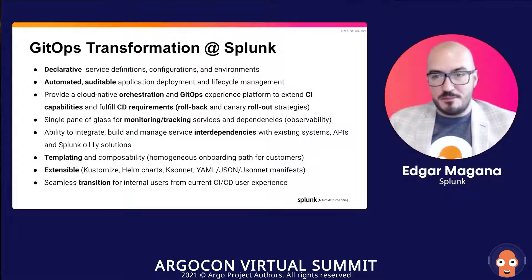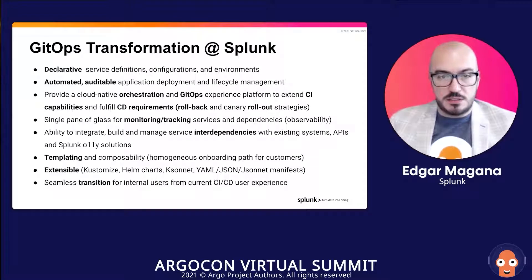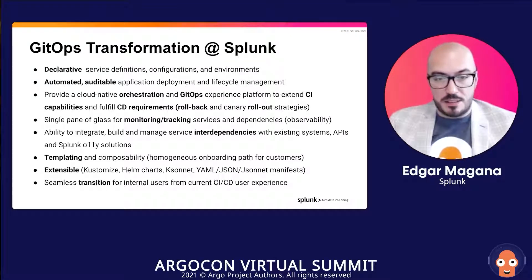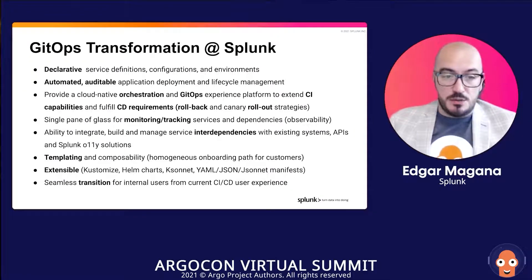In the microservice architectural world, it's impossible to have all the pieces in the same place, so we needed to do a lot more smoke testing and system integration before releasing or rolling out into production environments. We want to do templating and composability — the idea is to have a more homogeneous CI/CD process for all application and service owners. Even though we want a homogeneous deployment, we cannot mandate different ways to do service definition, so we're open to customizing Helm charts, Kustomize, etc. Most importantly, for a transformation to be successful, it needs to be as smooth as possible — a seamless transition for our customers.